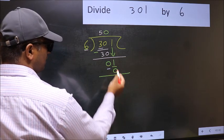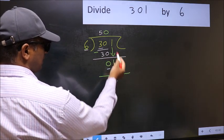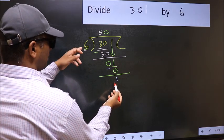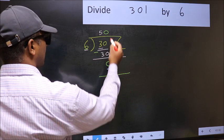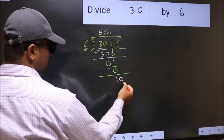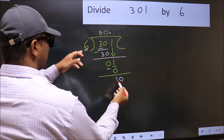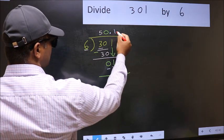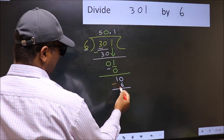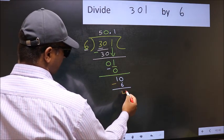Over here, we did not bring any number down. And 1 is smaller than 6. So now you can put dot and take 0. So 10. A number close to 10 in 6 table is 6 once, which is 6. Now you should subtract. 10 minus 6 is 4.